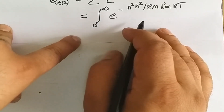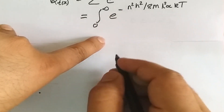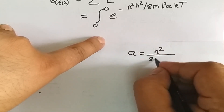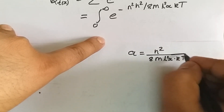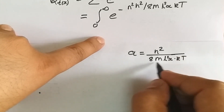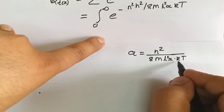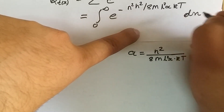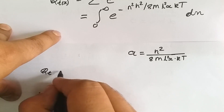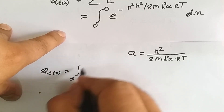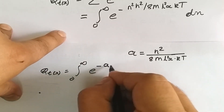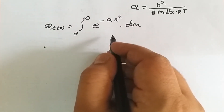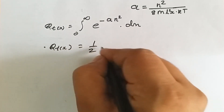We take all constant terms together and define a equals h squared upon 8mL_x squared kT. Here h is Planck's constant, m is mass, L is the length of the container, k is Boltzmann's constant, and T is temperature. So qt_x equals the integral from zero to infinity of e raised to minus a times n squared dn.